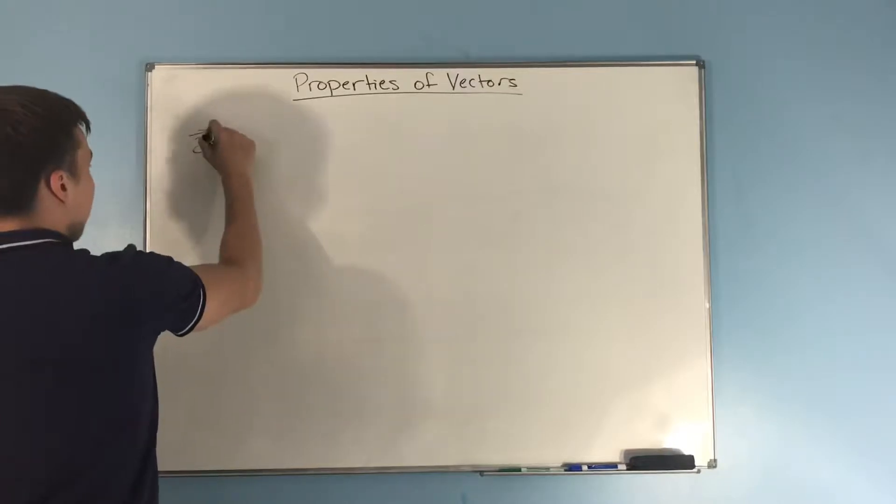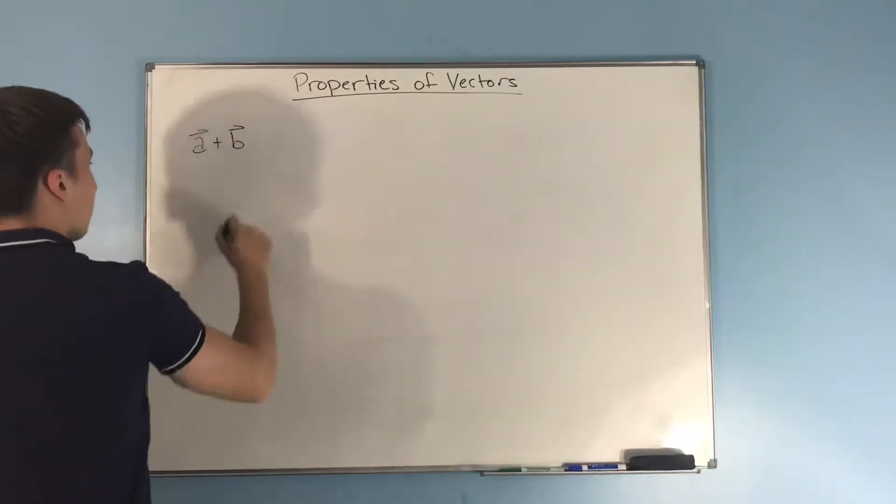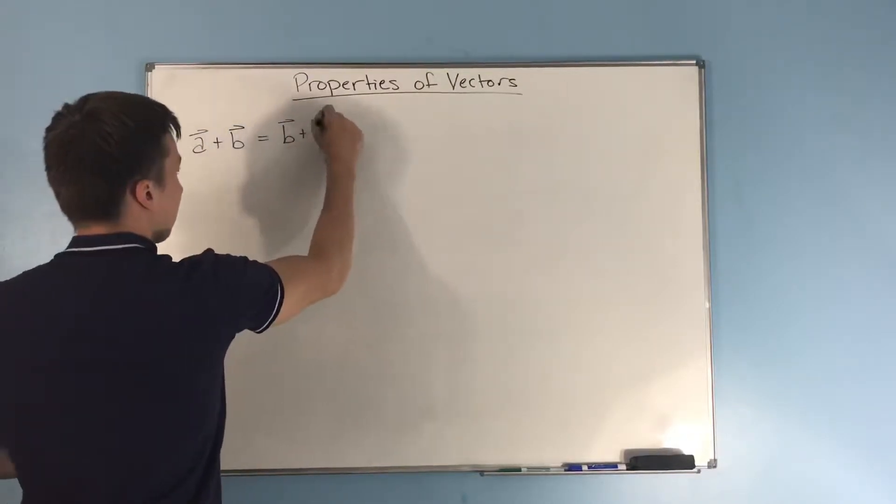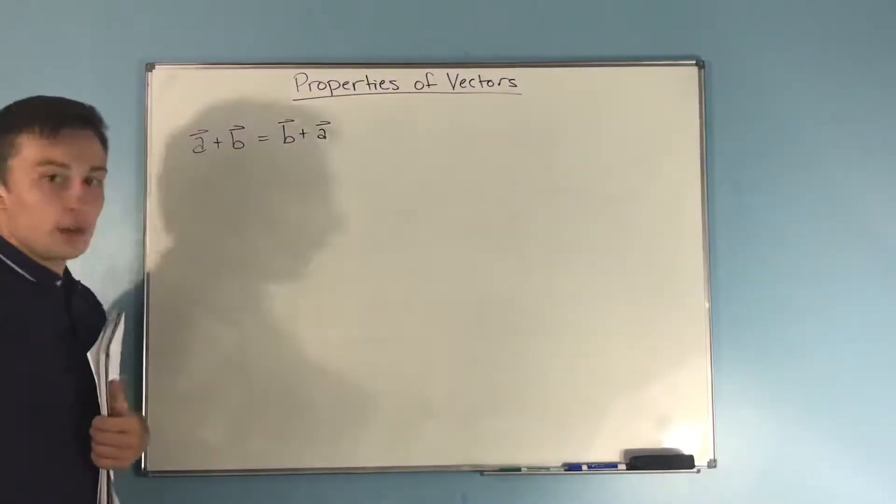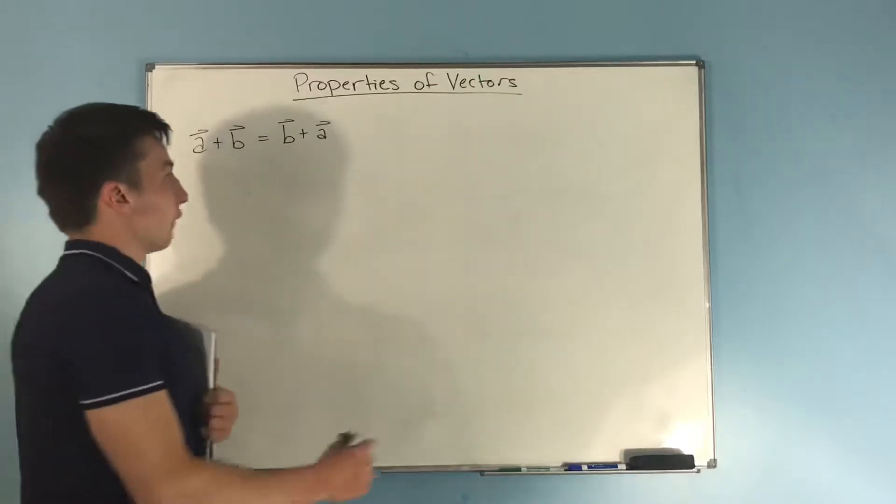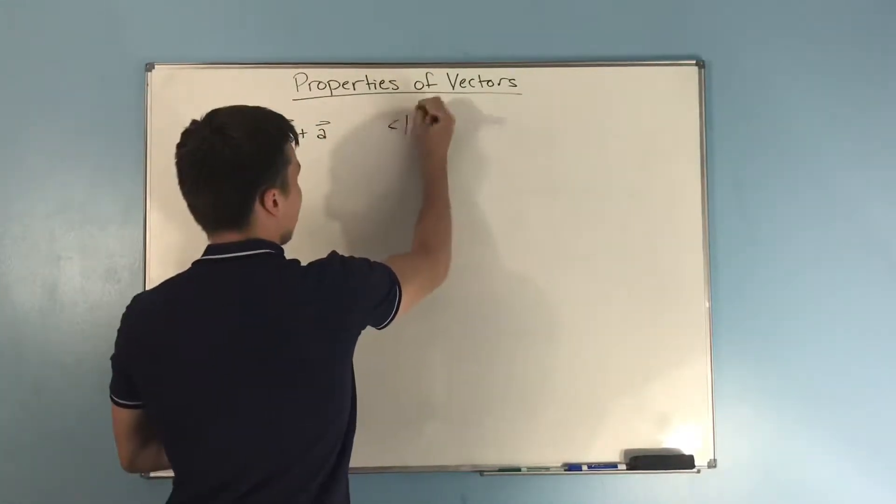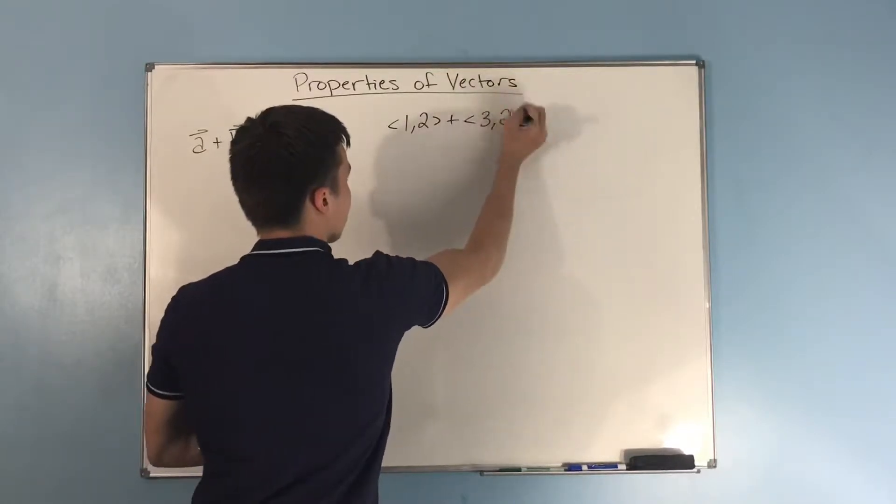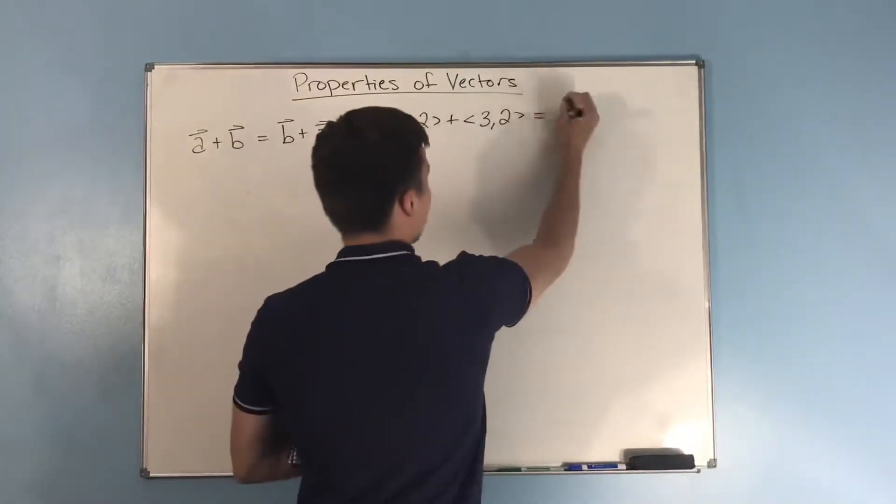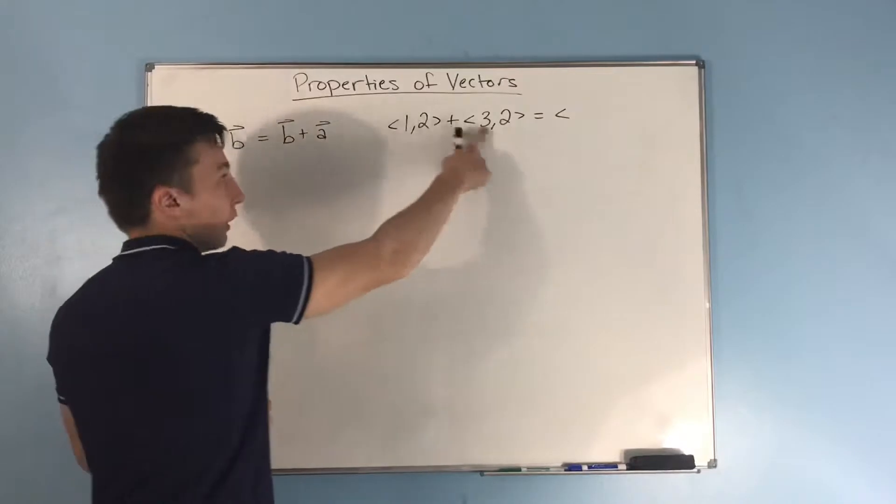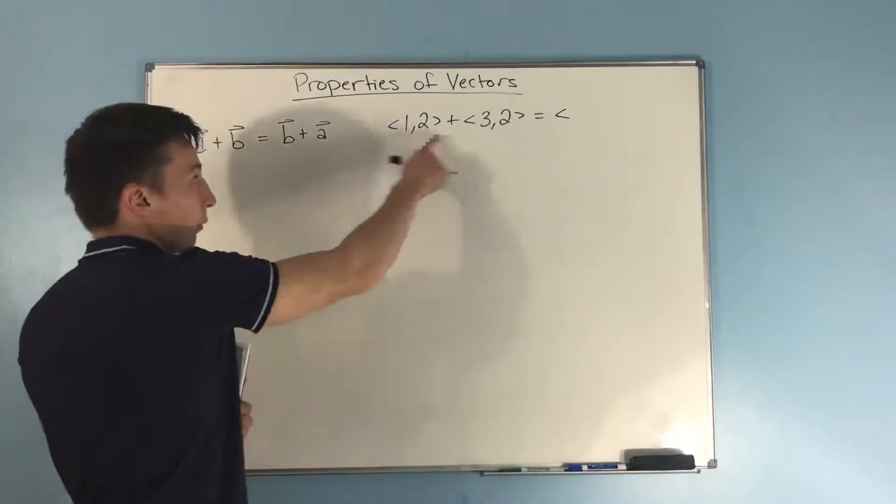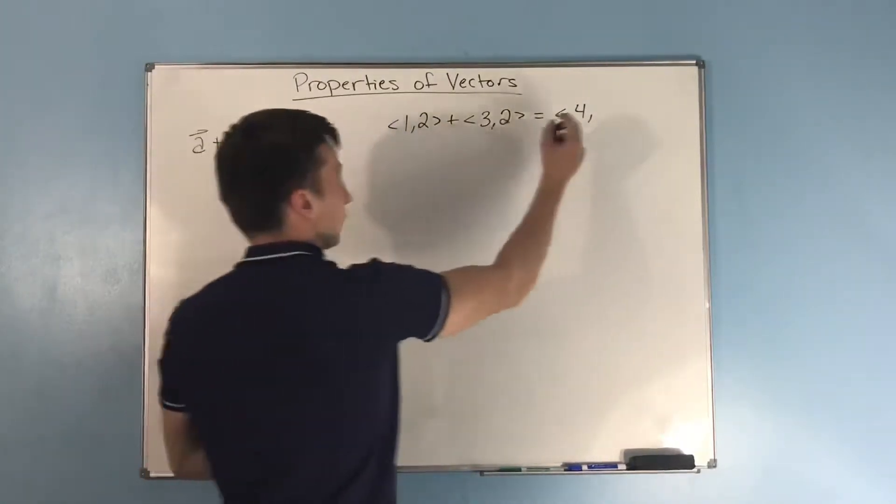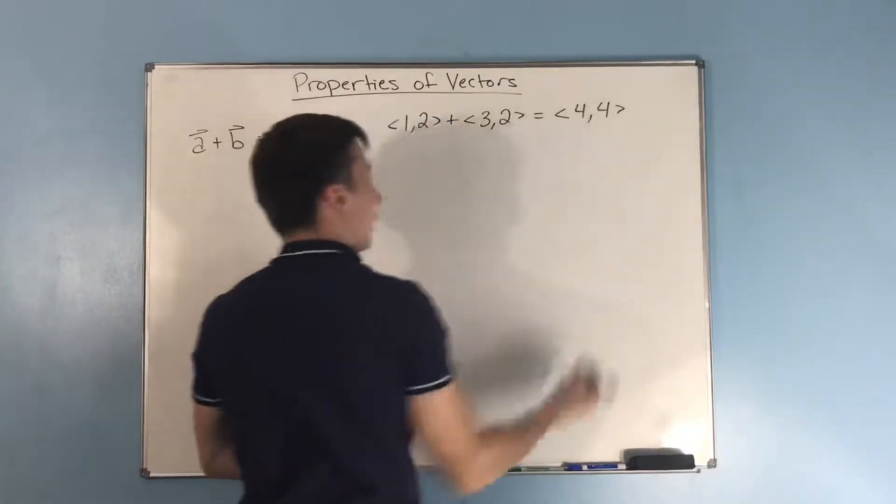The first property is that vector A plus vector B is the same thing as vector B plus vector A. And that makes sense, right? If vector A is 1,2 and vector B is 3,2, you add the components of each vector. 1 plus 3 is 4, and 2 plus 2 is 4, you get 4,4.